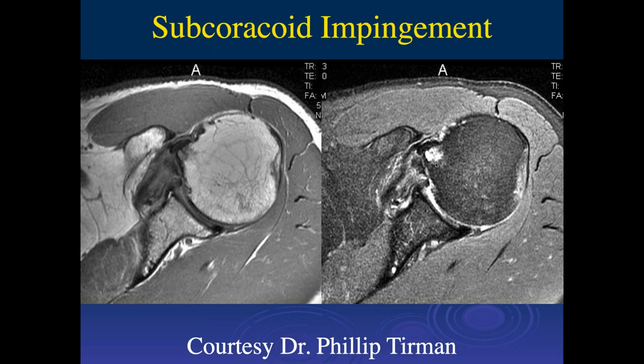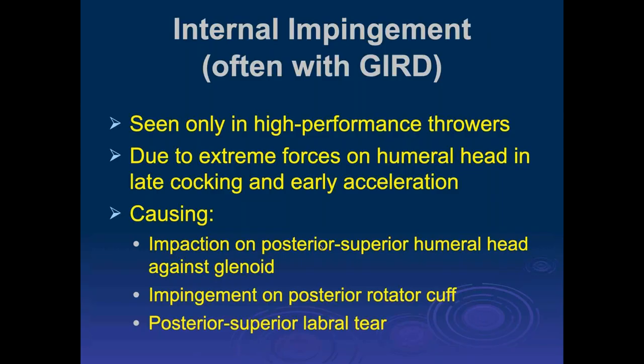John raises the point about weightlifters: the pectoralis major pulls the humeral head immediately against the coracoid, pinching all the structures in between. Weightlifters love large pectorals, which could contribute to coracoid impingement.